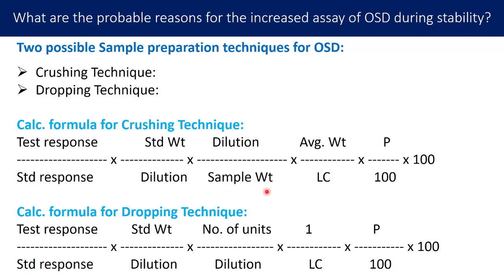In the crushing technique, the tablet is crushed into a fine powder and the equivalent weight of the API is taken for further sample preparation, requiring average weight, label claim, and sample weight. In the dropping technique, you do not weigh the sample or measure the crushed powder — you simply drop the decided number of units, then dilute, sonicate, treat, and conduct the assay.